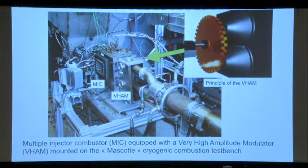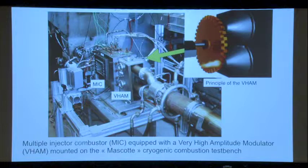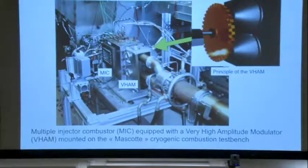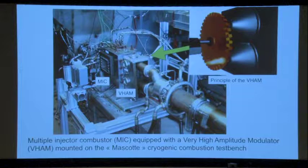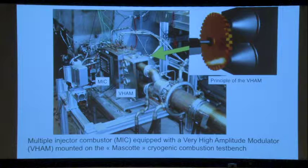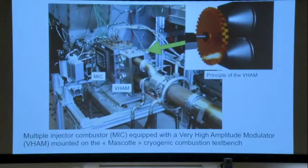Let me show what we were doing for rocket engines. We did a lot of work on what happens when transverse modes interact with flames under rocket-like conditions. This is a combustor with multiple injectors. To excite it, we invented a very high amplitude modulator: a rotating wheel with teeth that block the nozzle. You have two nozzles at the end of this combustor — when one is blocked, the other is open — so you can excite a transverse mode. Everything here is at about 60 bars pressure, above the critical pressure of oxygen. This test bench is called Mascot.